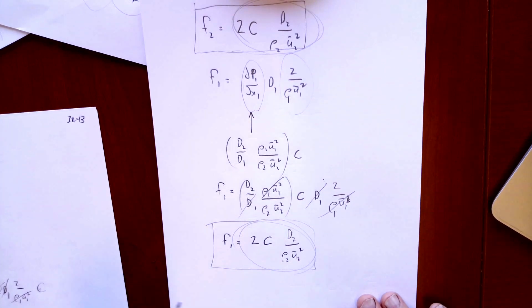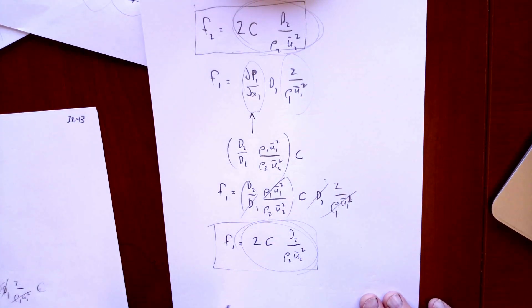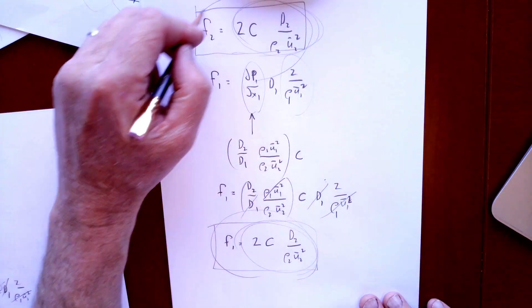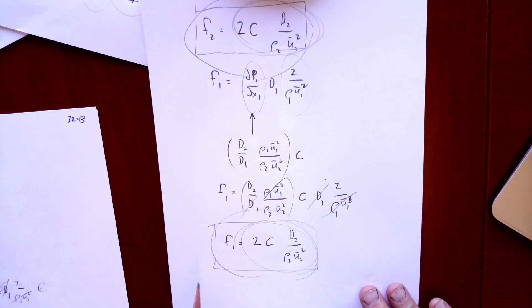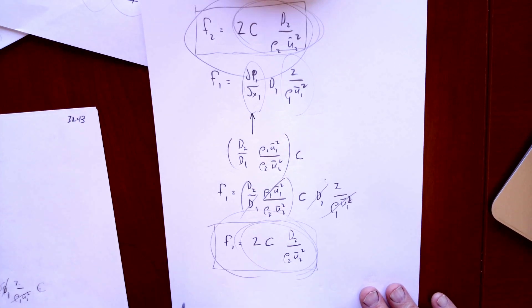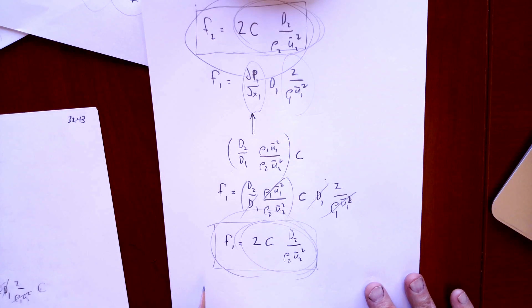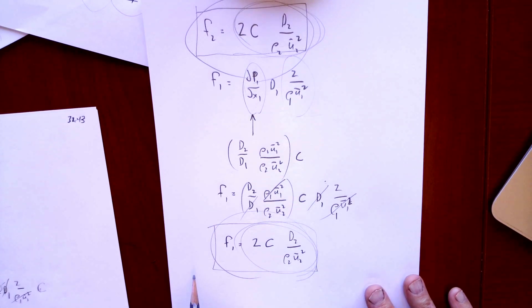By measuring f2, we also find f1, and that's why, this is the reason why the friction factor, when you're looking it up on the Moody diagram, you only need to know two things. You need to know the dynamic similarity, you need to match the Reynolds number, and you need to know the geometric similarity, which is just epsilon over D for a fully developed pipe.